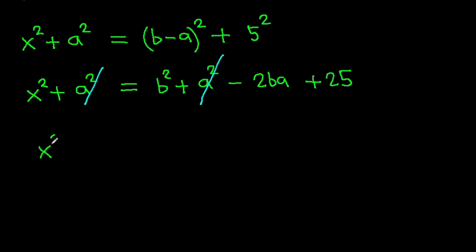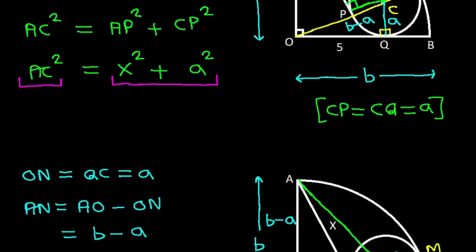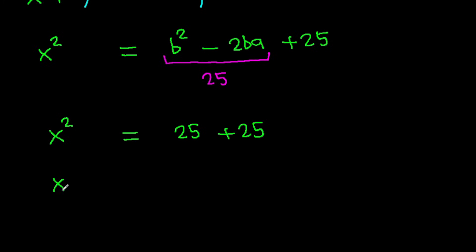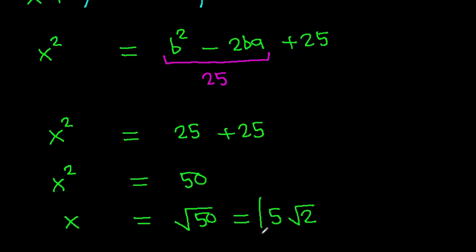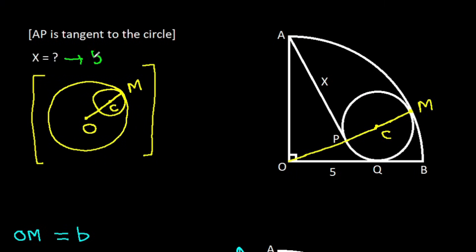So x² equals b² minus 2ba plus 25. And we have b² minus 2ba equals 25. So x² equals 25 plus 25, which means x² is 50. That means x will be root 50, that will be 5 times root 2. So x equals 5√2.